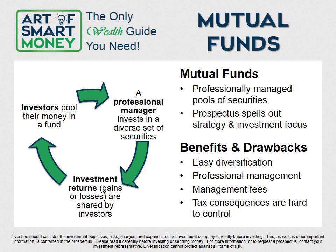Some people believe that instead of paying professionals to actively manage a fund — because studies have shown that many don't beat the market — you should just buy a passively managed mutual fund that mirrors the index. An index is the Dow Jones or the S&P 500 — a collection of stocks averaged out on their prices. When an actively managed manager beats the market, that's very good, but some will lose out due to bad market timing, bad investments, and the taxes and fees associated with it.